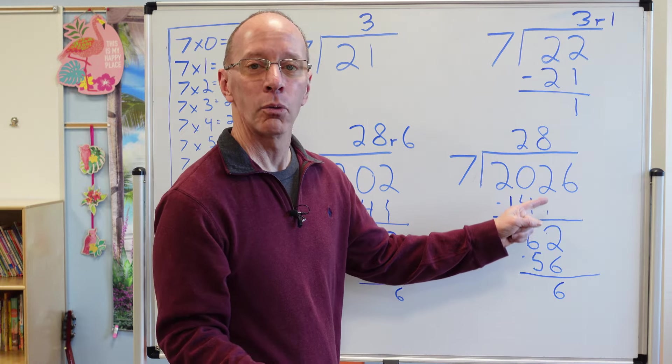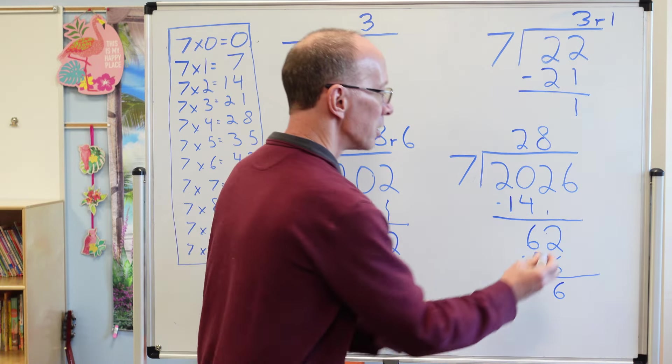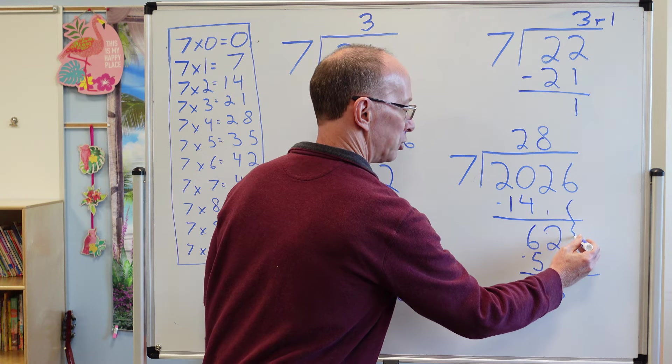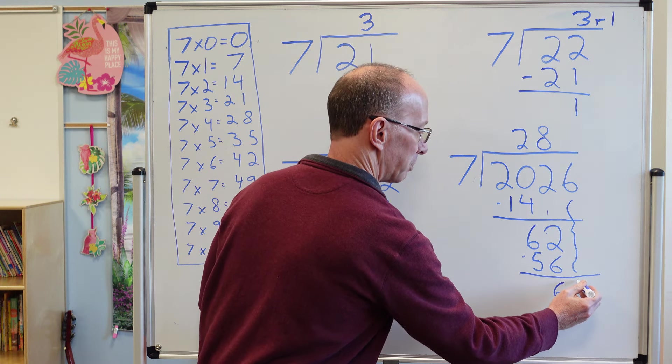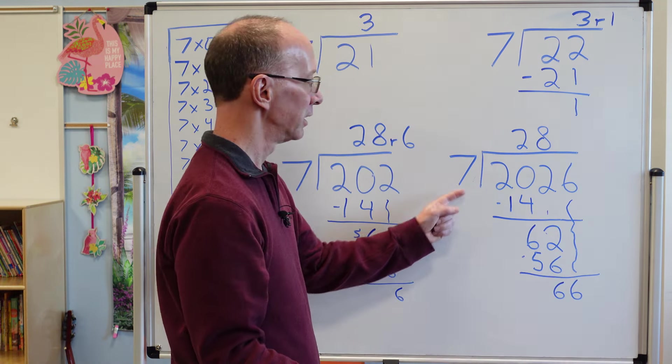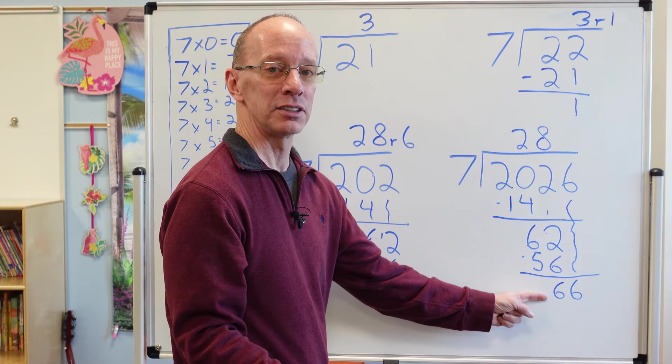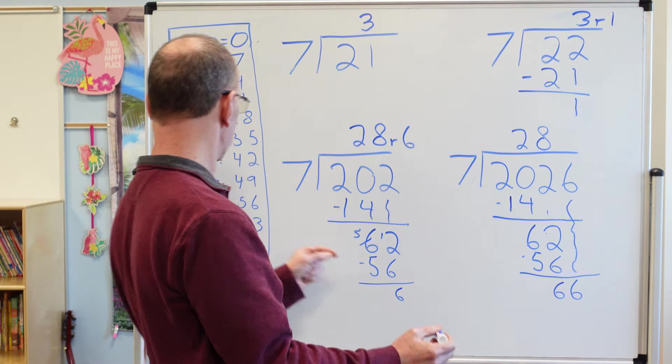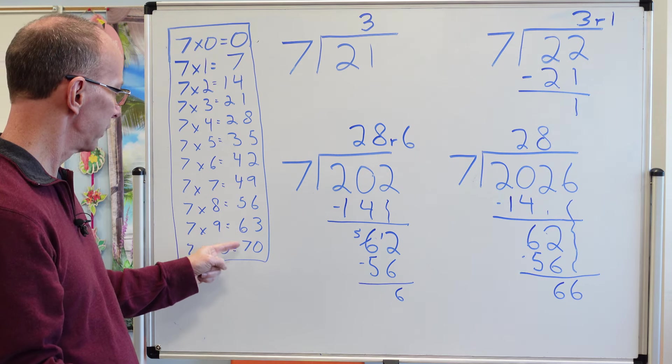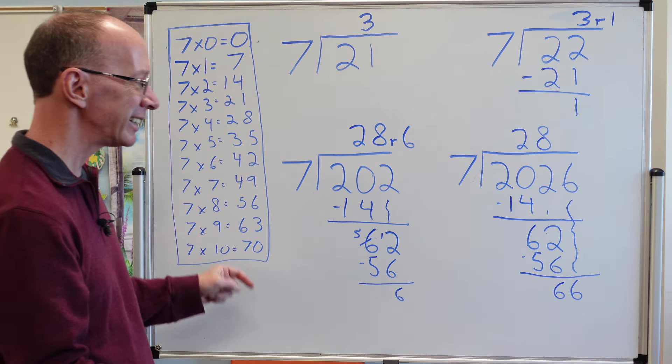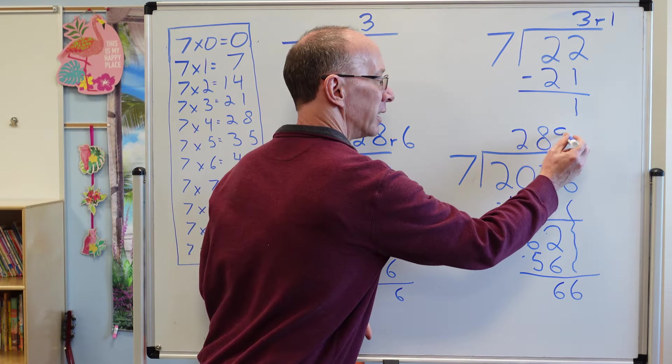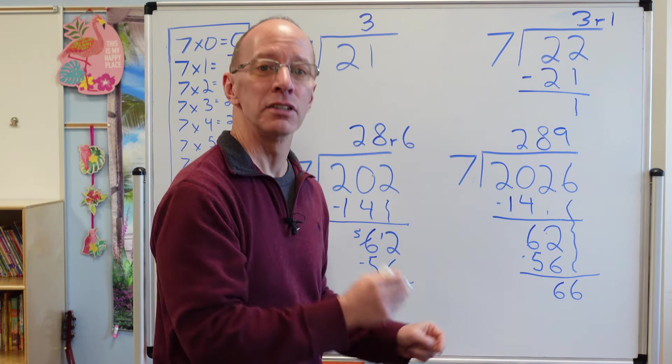We still have one more number to bring down. Just drop it down. Right there. How many times does seven go into 66? 66. We can put nine times. So I'm going to put a nine right here. Nine times seven. 63. Put the 63 right here.